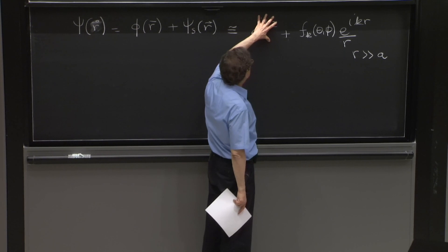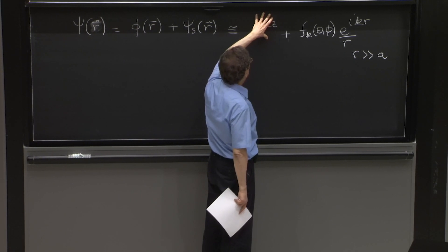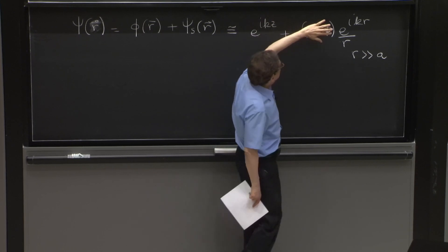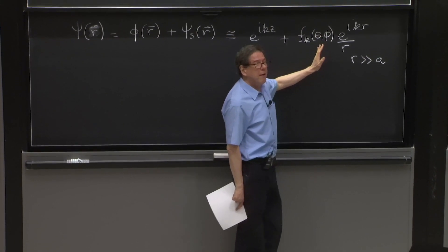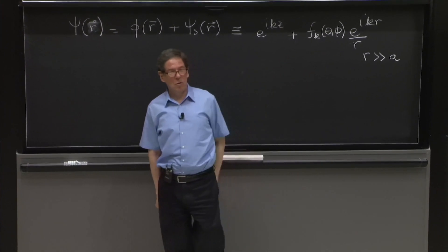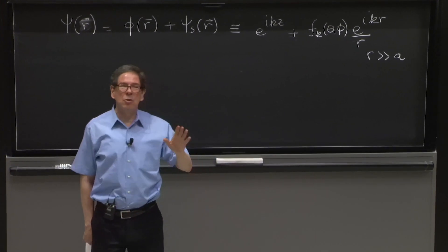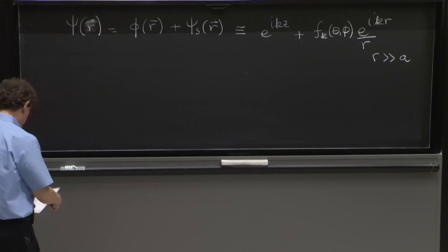This would have been an exact solution of the time independent Schrodinger equation, and this without the F would have been an exact solution. But with the F, it's an approximate solution. But that's a solution that represents the physics of scattering.